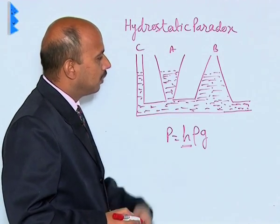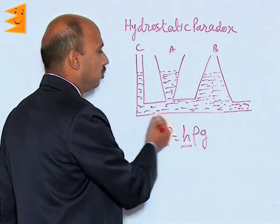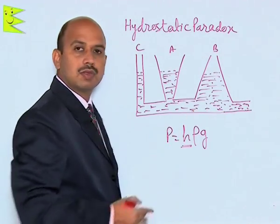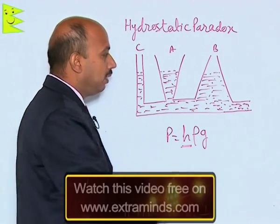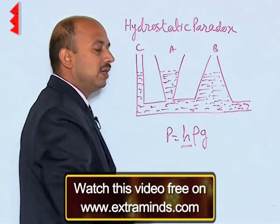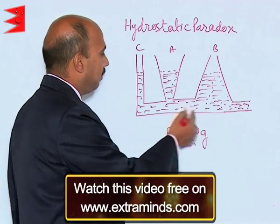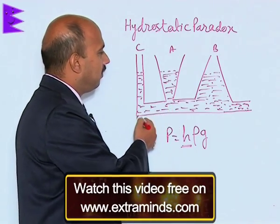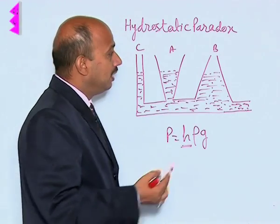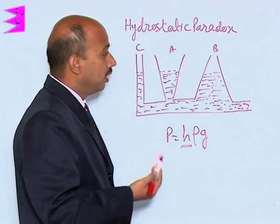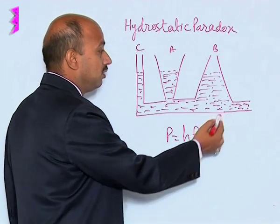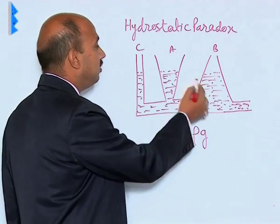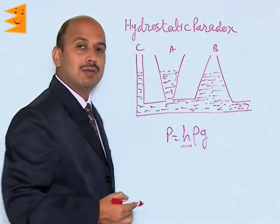So, see in this example — this is a horizontal pipe in which water is flowing, and by flowing this water, the same pressure is maintained at every place. There are three vessels having different areas and different shapes. Since the pressure at the bottom is the same, the liquid rises in all three vessels to the same height.